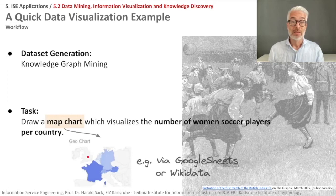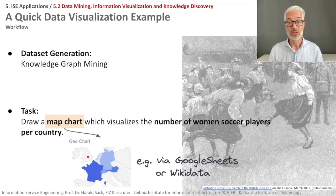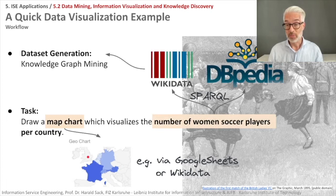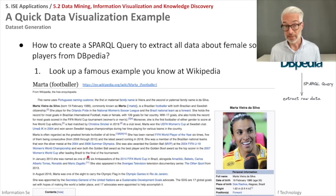To draw a map chart we can use online tools like Google Sheets, or we can use Wikidata which also enables chart-based visualizations. To determine the number of soccer players per country, we create a dataset of women soccer players from the large knowledge bases Wikidata or DBpedia, and we do this via SPARQL.